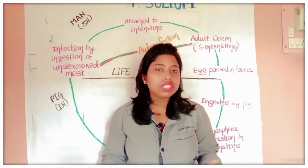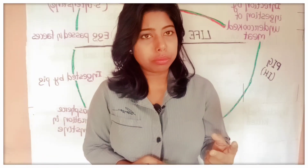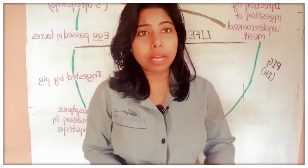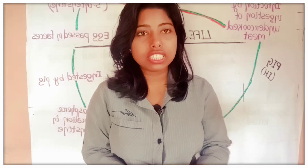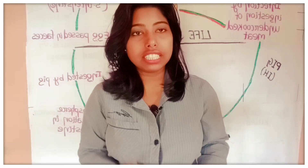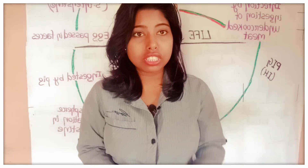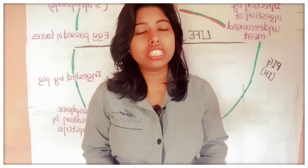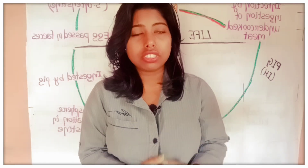The clinical features of Taenia solium involve two types of disease: intestinal taeniasis and cysticercosis. For intestinal taeniasis, stool examination is done — looking for proglottids or eggs in the stool. For cysticercosis, which is highly dangerous, CT scan, MRI, X-ray, and biopsy are performed. Serological tests are also done, including antigen detection and antibody detection through the ELISA method. These are the lab diagnoses of Taenia solium.